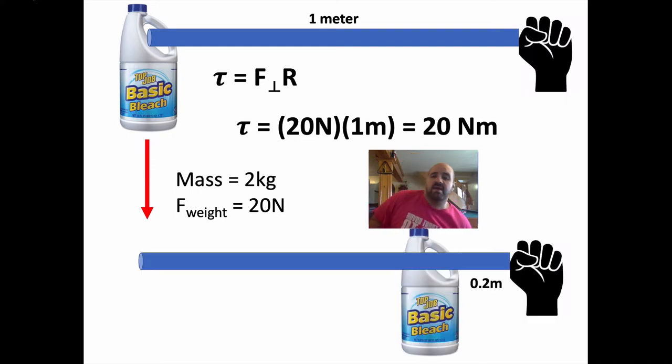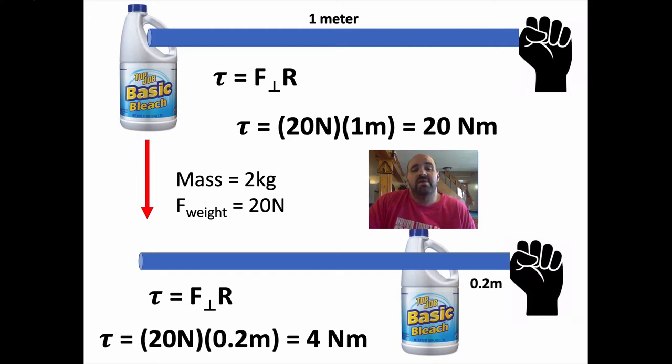Now, what if I change this up? What if I move the bleach much, much closer? If I move the bleach all the way in here to 0.2 meters, now we know we are not going to generate as much torque, because the R value is going to be much smaller. So torque, again, is force times distance. The bleach's mass or weight has not changed at all. It's still the same 20 newtons. The only thing that has changed is the R value. The bleach is now 0.2 meters from my hand instead of 1. So 20 times 0.2 is going to be 4 newton meters. So you're generating a lot less torque, a fifth the amount, because it's 5 times or a fifth the distance away. So keep that in mind. Torque is just force times distance, and we can calculate it using that simple formula.